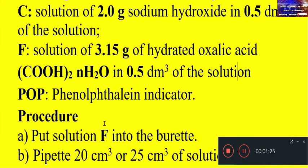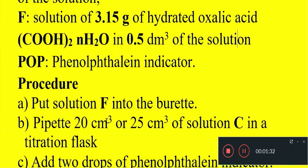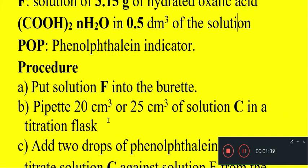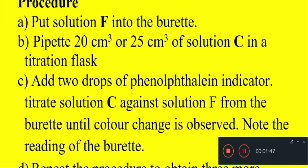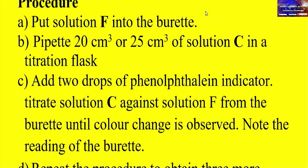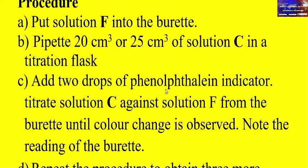Procedure: put solution F into the burette. Use a pipette to measure 20 or 25 centimeter cubed of solution C into the titration flask. Then add two drops of phenolphthalein indicator and titrate solution C against solution F from the burette until the color change is observed. Note the burette readings. You perform one pilot titration, then titrations two, three, and four — to obtain approximately four readings from the burette.